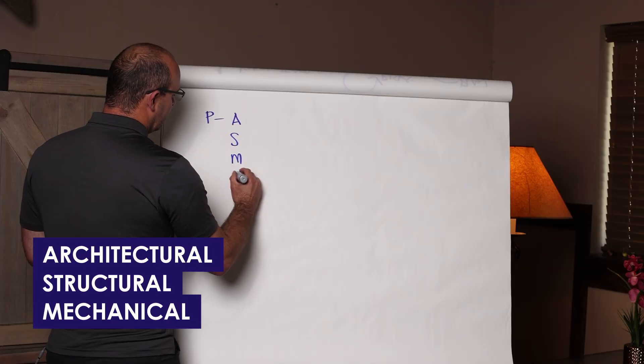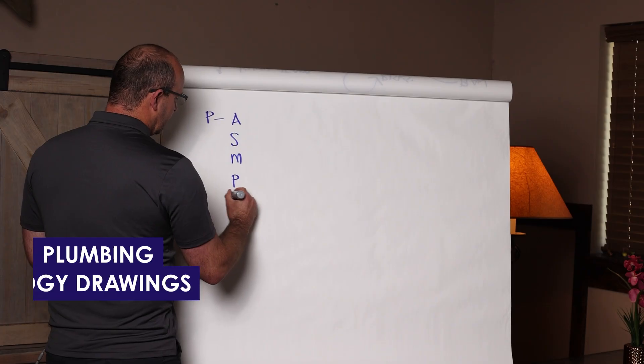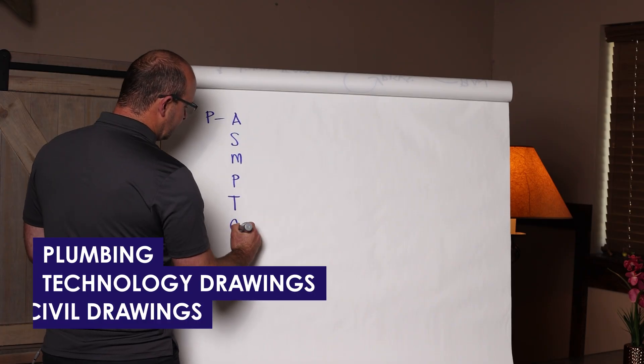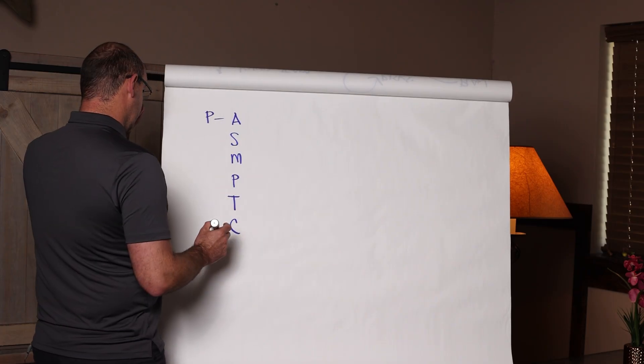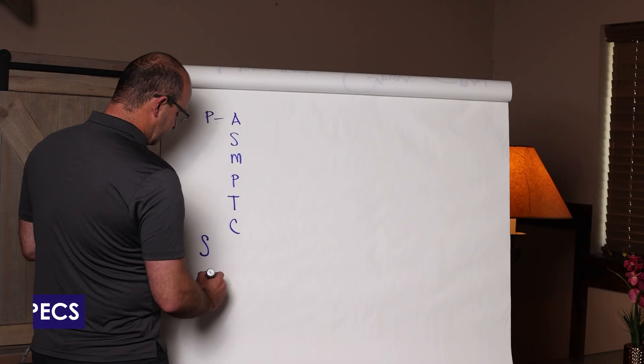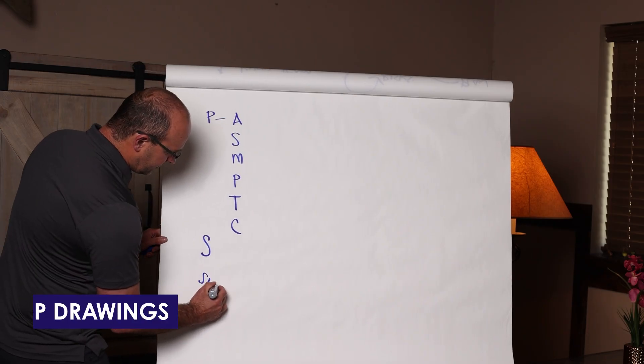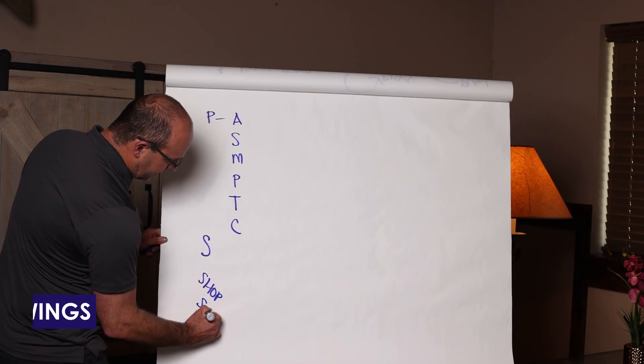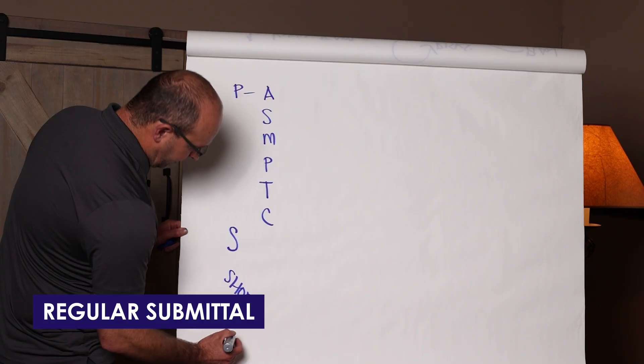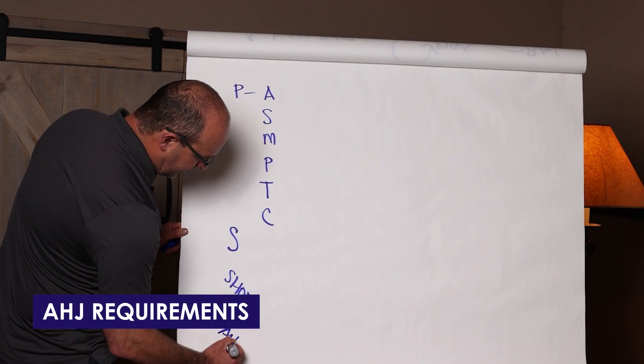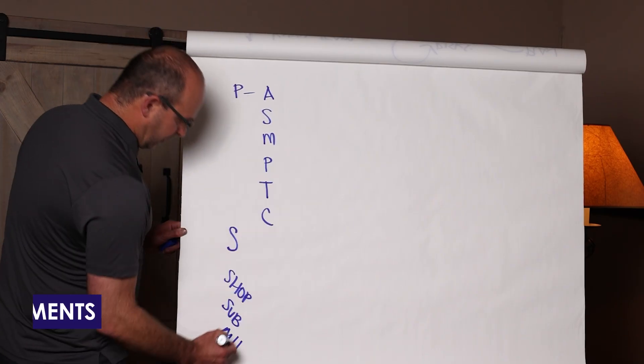You have your plans, and let me just write down architectural, structural, mechanical, plumbing, your technology drawings, your civil drawings. I'm probably missing something, but you have your plans and then you have your specs and then you have your shop drawings or maybe it's just a regular submittal for a product. You have AHJ requirements, you have code requirements.